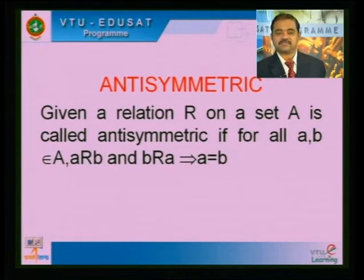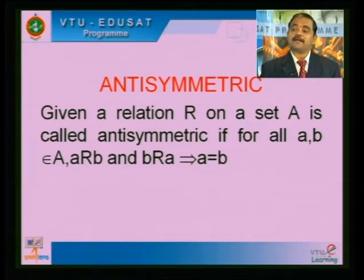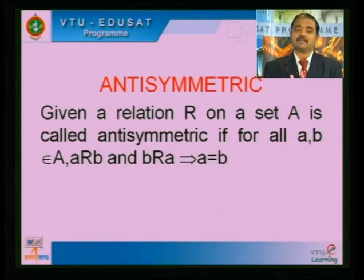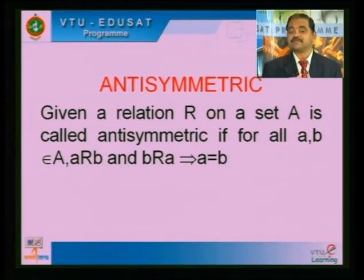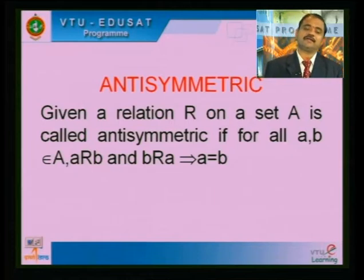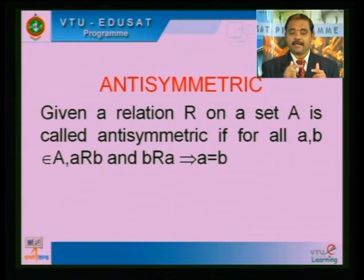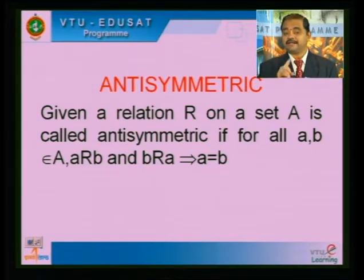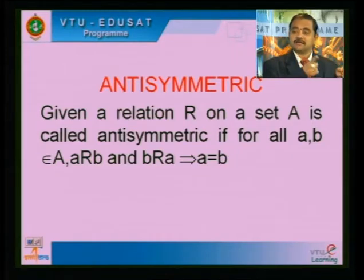One more property is anti-symmetric. We have seen symmetry: (x,y) in R implies (y,x) also in R. For anti-symmetry: if A is related to B and B is related to A, then definitely A should equal B — that is called anti-symmetry. In anti-symmetric relations, 99 percent of the time we get reflexive elements. Given a relation R on a set A is called anti-symmetric if for all a, b in A: a related to b and b related to a implies a equals b.